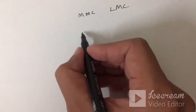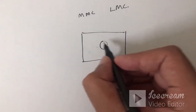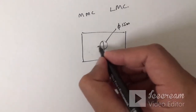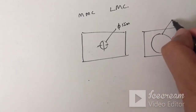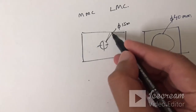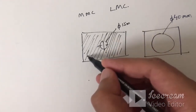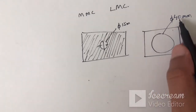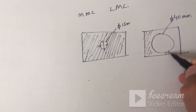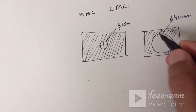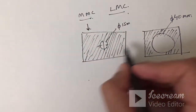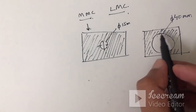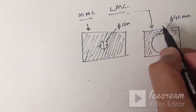Before moving ahead, let us discuss what MMC and LMC are. Suppose I have a rectangular box with a hole of 15 mm diameter, and another rectangular box with a hole of 40 mm diameter. When the hole is small we have more material in the part, and when the hole is bigger we have less material. When the hole is smaller this condition is known as maximum material condition (MMC), and when the hole is bigger we have less material — that is the least material condition (LMC).